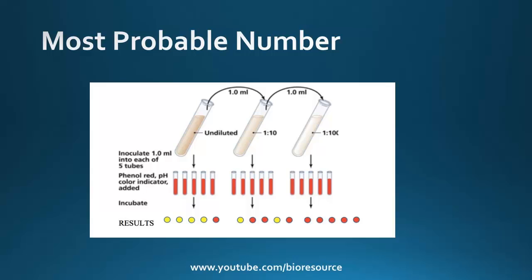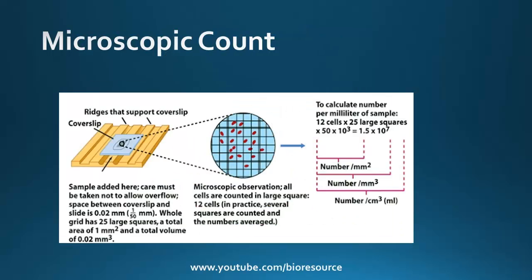The other direct method is the microscopic count. In this case, a hemocytometer kind of slide can be used, and a fixed volume of culture is added to that. The slide will have different grids, and the cells can be counted under the microscope. The advantage of this technique is there is no incubation required, but the disadvantage is that if you are looking for the growth of immortal bacteria, it is difficult to monitor in this case.